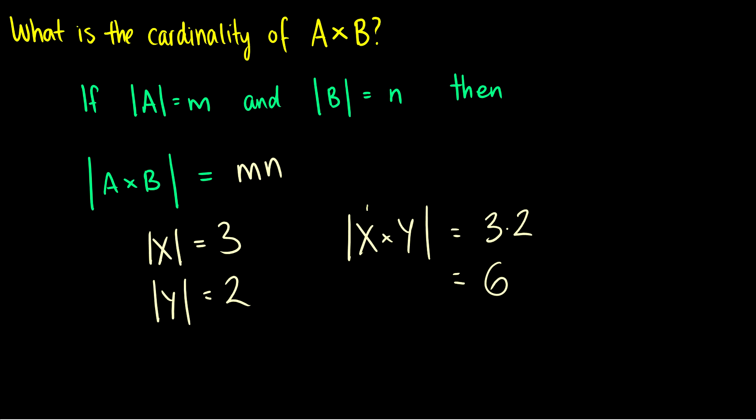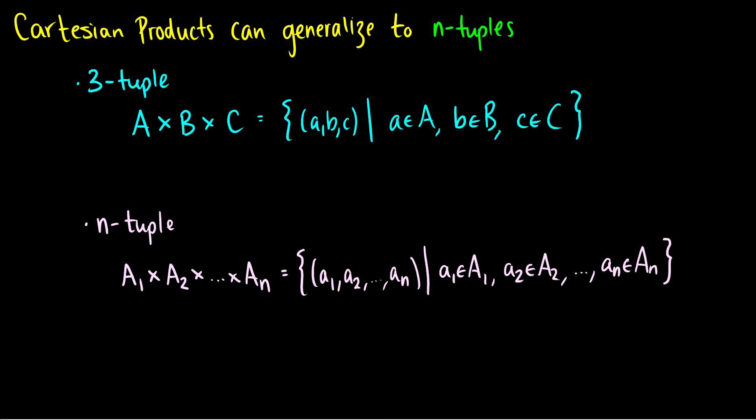And this is because each element in X has to pair with each element of Y. So of course, you would have 3 times 2, which is 6. And it doesn't matter how big the set is. If A has size 30 and B has size 20, then A cross B would have 30 times 20 elements in it or 30 times 20 ordered pairs in it.